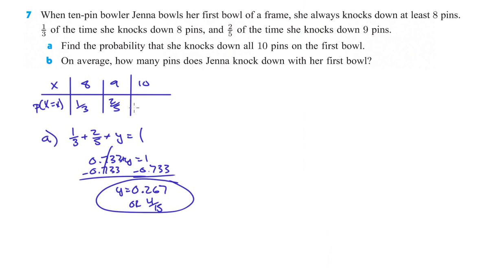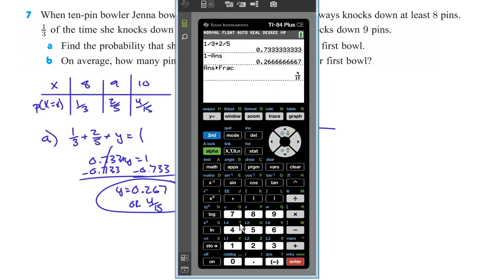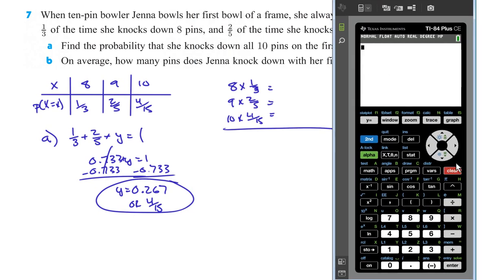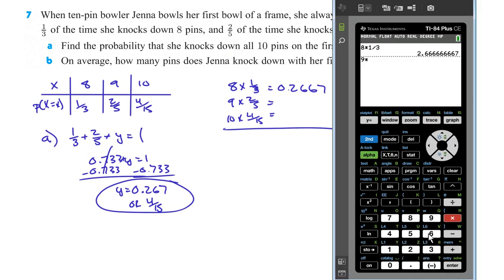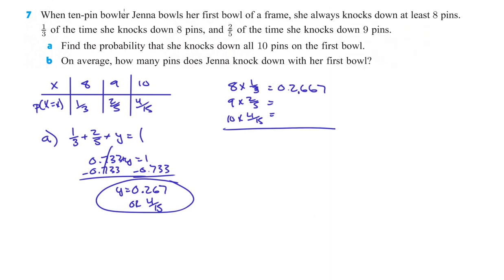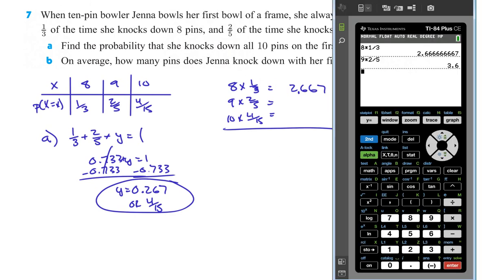Okay, so that's for part A — the probability she knocks down all 10 pins is 4/15. For part B, on average how many pins does Jenna knock down with her first bowl? That's going to be 8 times 1/3 plus 9 times 2/5 plus 10 times 4/15. So 8 times 1/3 gives us 2.667, and 9 times 2/5 gives us 3.6.